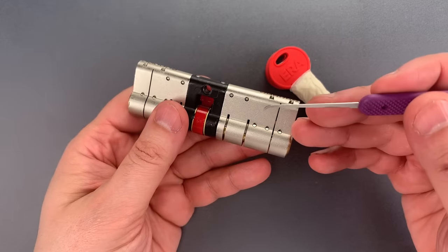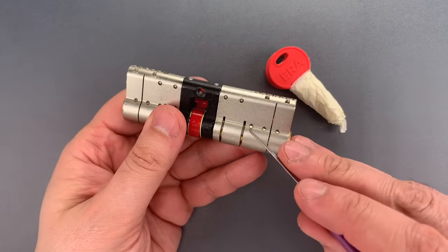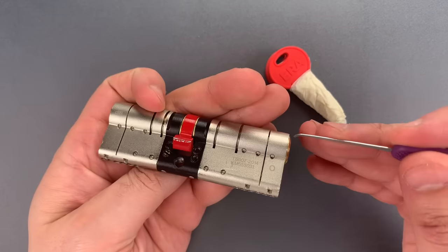Finally, this lock includes six trap pins to help foil pickers, one, two, three, on each side.